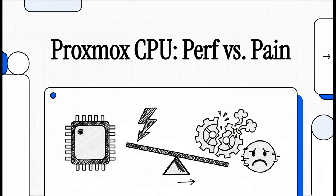Today we are diving deep into a Proxmox setting that looks so simple, but it is secretly one of the most important choices you can make: the CPU type. That tiny little drop-down menu holds the power to make your virtual machines absolutely fly, or to make them crash and burn at the worst possible moment.